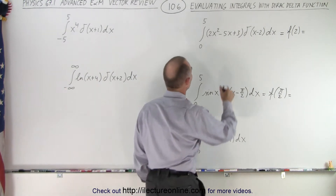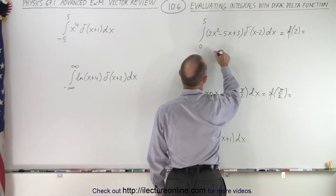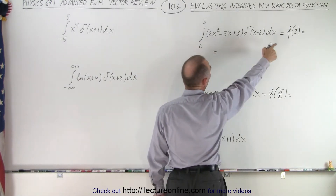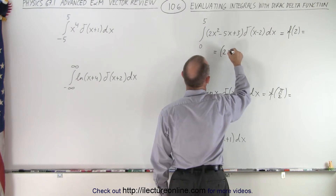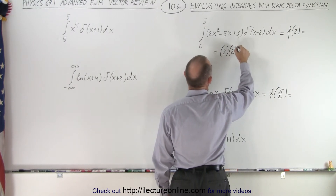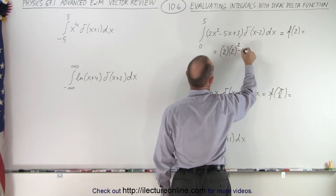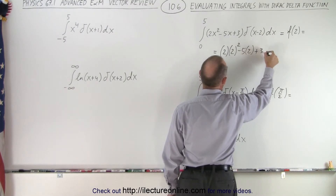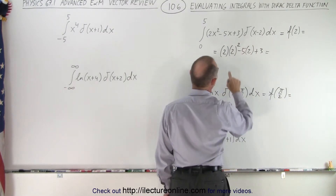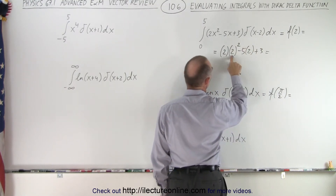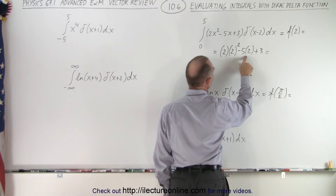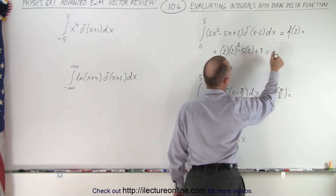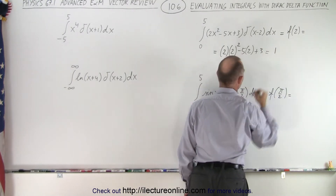So in this case, that would be equal to the function evaluated at 2. This becomes 2 times 2 squared minus 5 times 2 plus 3. That would be 4 times 2 is 8, minus 10 is minus 2, plus 3 would give us positive 1.